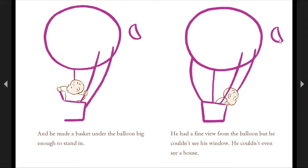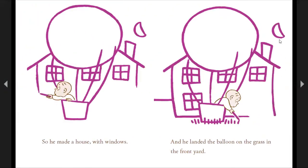He had a fine view from the balloon, but he couldn't see his window. He couldn't even see a house. So he made a house with windows and he landed the balloon on the grass in the front yard.